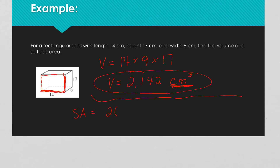And I've got two of those. Plus I'm going to do the sides, which is 9 and 17 — and there are two of those. And then we have the top and the bottom, and those are 14 and 9.